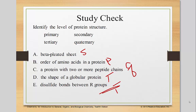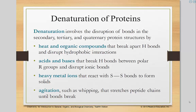Now let's talk about breaking proteins apart — that's called denaturation. Denaturation involves the disruption of bonds in the secondary, tertiary, and quaternary structures. Heat and organic compounds break hydrogen bonding. Acids and bases also break hydrogen bonding between the polar R groups. Heavy metals such as silver react with the sulfur-sulfur bonds. And finally, agitation — basically whipping the protein and pulling it apart physically.